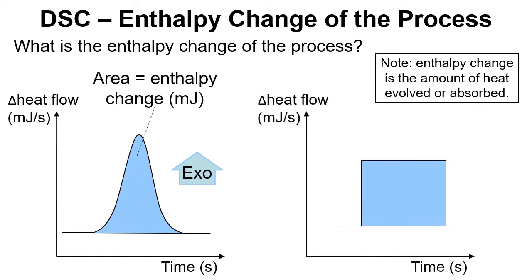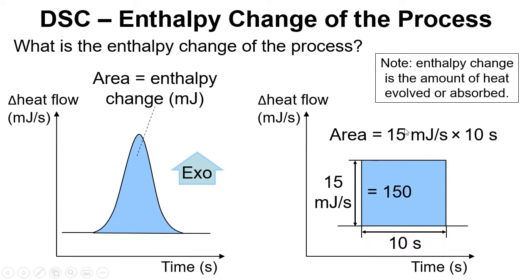If we just think for a moment about this example where we've got a rectangle, now we wouldn't ever really get a result like this but it's a useful illustration of why the area gives us the energy. Let's imagine we've got 15 millijoules per second high for this block and that we're 10 seconds wide. So the area equals 15 millijoules per second times 10 seconds. So we can work out the number quite easily, it's 150. And then we can also work out the units. Millijoules per second times seconds, well we're dividing by seconds here and then we're multiplying by seconds so the seconds cancel out and we're just left with millijoules. So that just illustrates that this area is giving us the energy associated with the enthalpy change for that process.